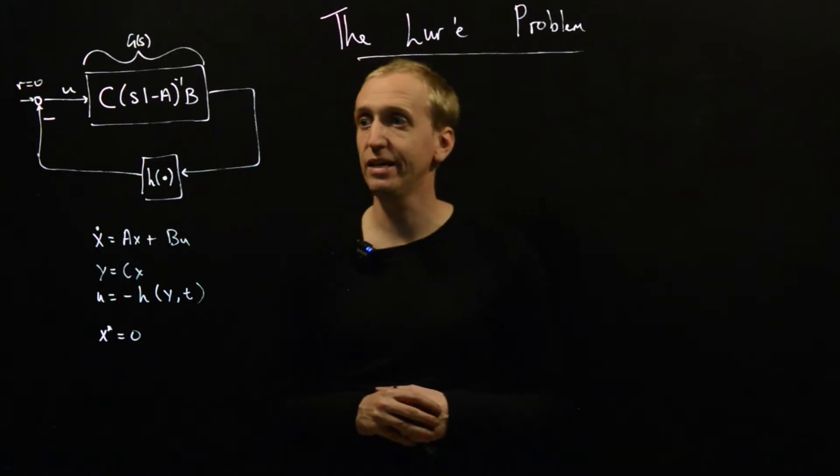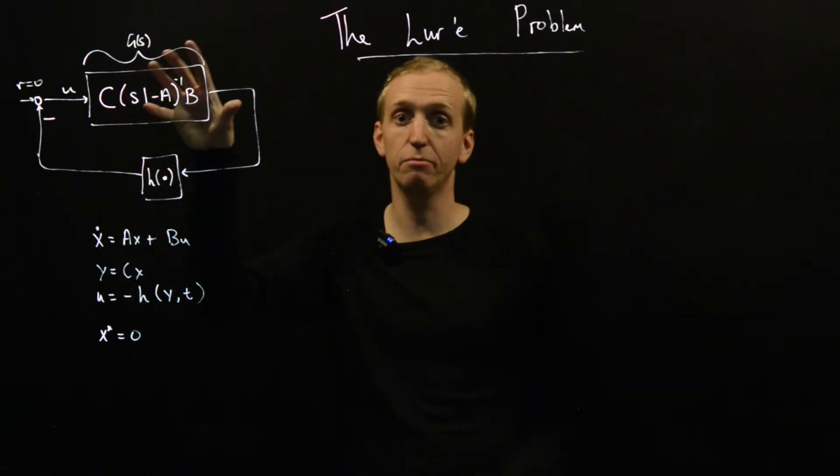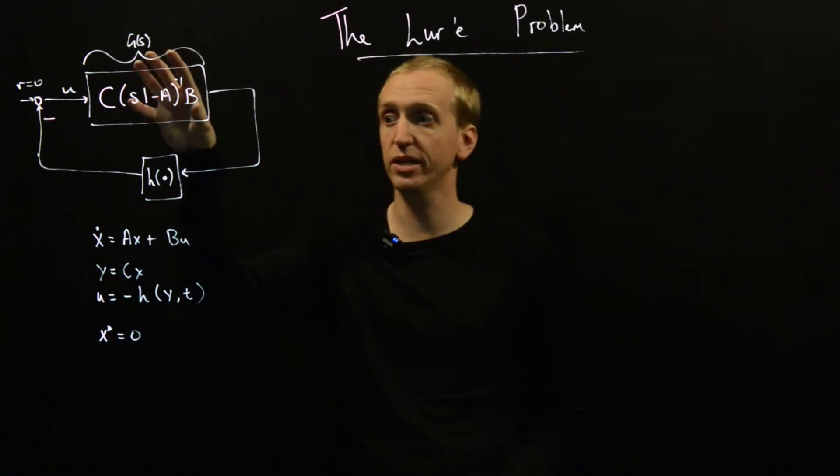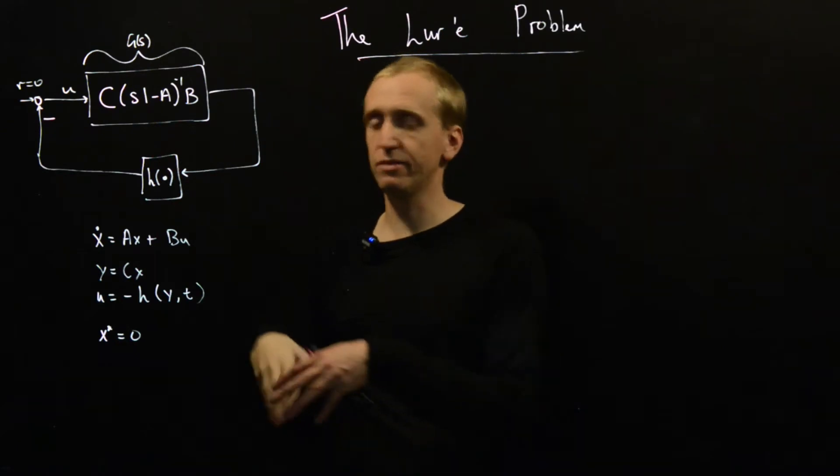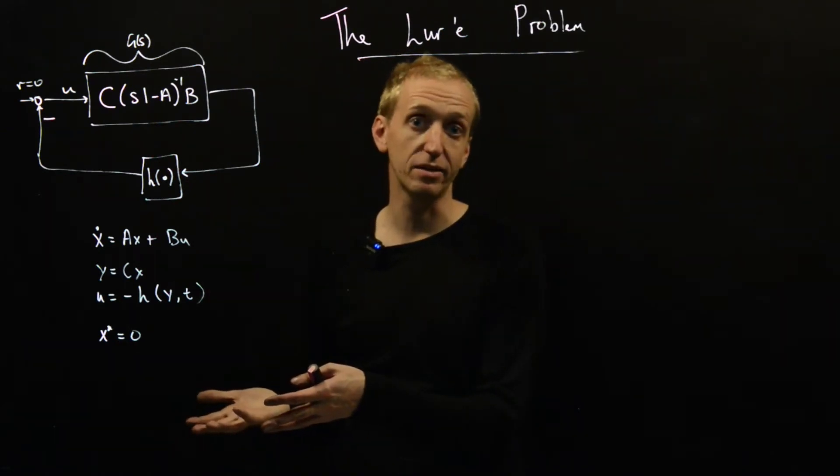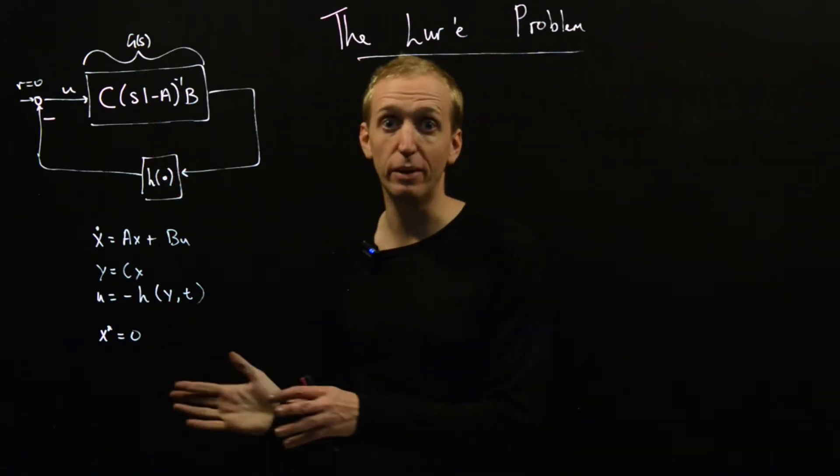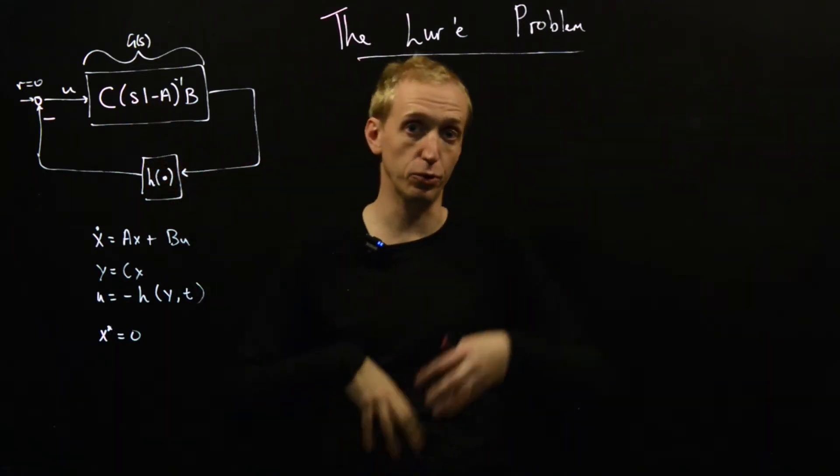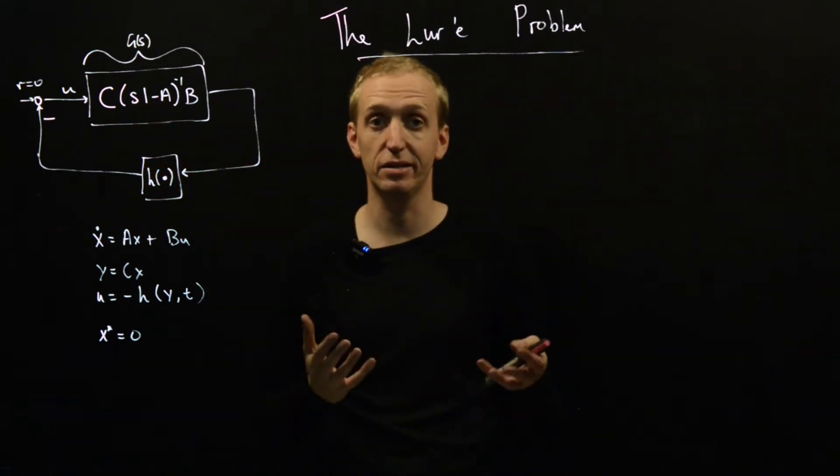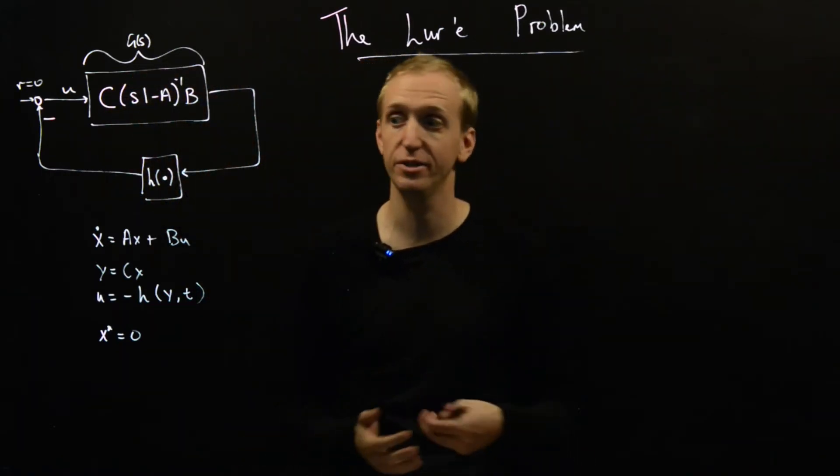So the types of problems that we're going to study today, they involve a feedback interconnection where we have a linear component with a transfer function G of S, and this is in feedback with our nonlinearity. And this is a very common form for nonlinear analysis. What you do is you pull out your particular nonlinear effect of interest and just assume everything else is linear. You put it into this form and then you use all sorts of specialized analysis tools for the problems of this structure. And that's what we're going to talk about today.